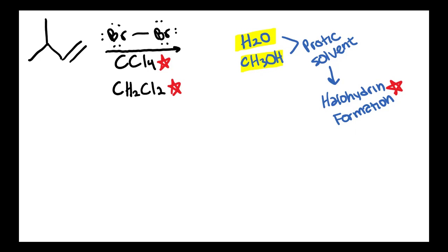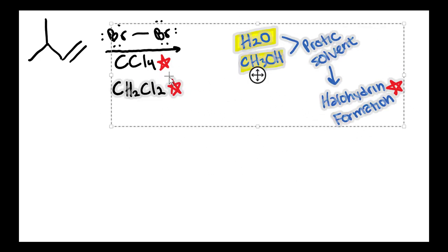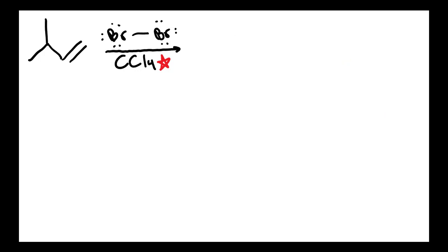Keeping all of that in mind, we can go ahead and move on with this reaction. When you're doing this mechanism for halogenation, the first step is to start with your nucleophile. The nucleophile is going to be the alkene, and it is going to attack one of the bromines. Then the bond between the two bromine atoms is going to break, and those electrons will go to the other bromine. We're going to draw out the new bromine that has added on — one of the bromines is going to add on to either this carbon or this carbon. I'm going to put it at the end, because that is the less substituted position — the carbon with more hydrogens. So we're going to add the first bromine to the less substituted position.